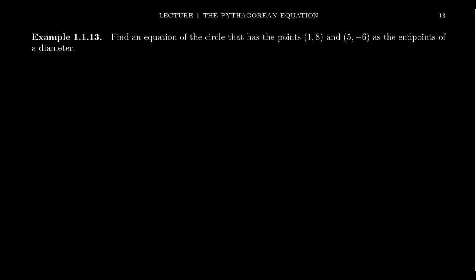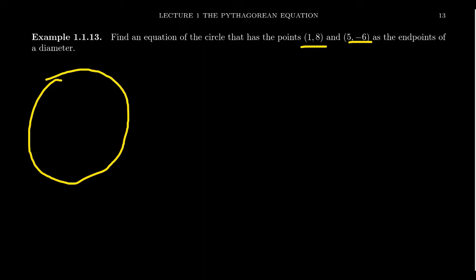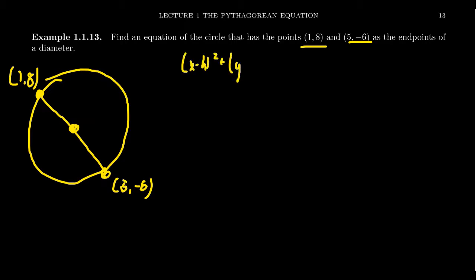Let's do one last example: find the equation of the circle that has points one comma eight and five comma negative six as the endpoints of a diameter. The equation looks like x minus h squared plus y minus k squared equals r squared. We need the center h comma k and the radius. Since we have a diameter, the center is the midpoint between the two endpoints.